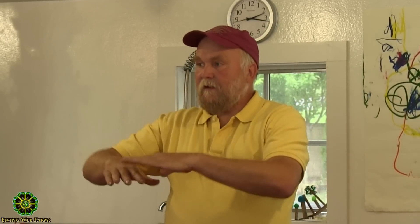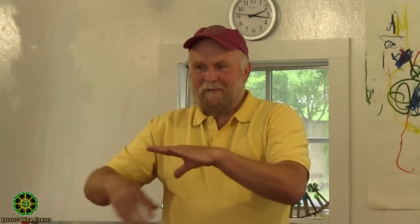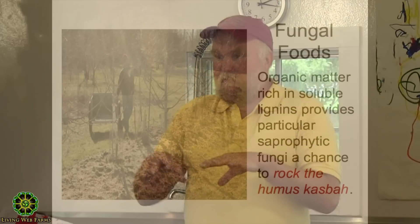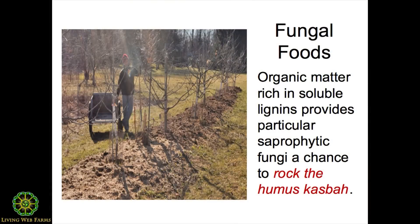Branches fall — that's a source of wood chips in a way; they're not chipped, but it's a source of wood chips. Leaves fall. And that soil in that forest edge ecosystem is not disturbed. So we basically just have to emulate it by providing the right kind of fungal foods.